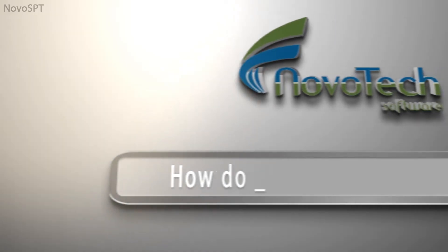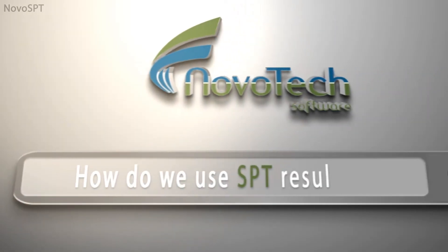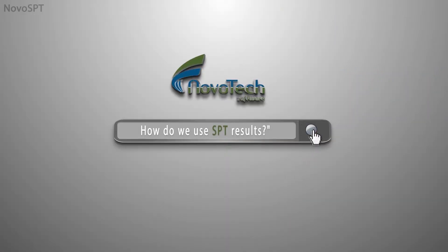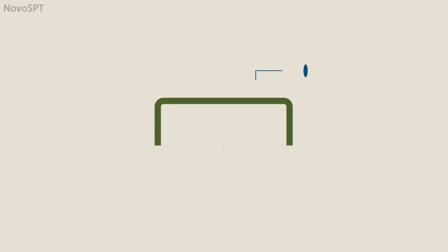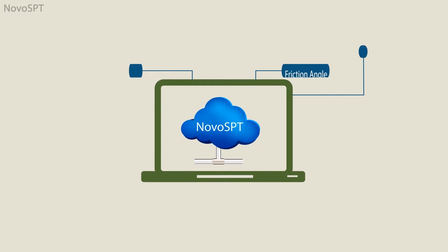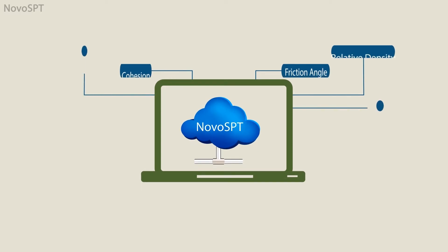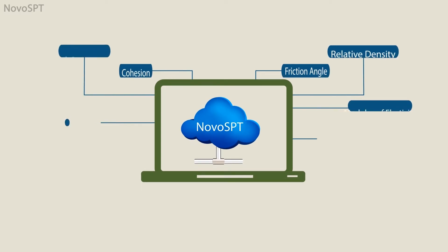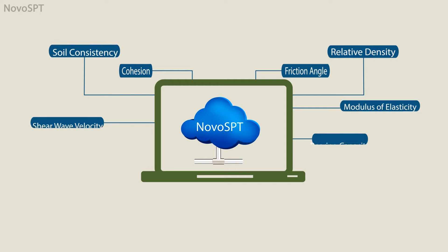How do we use SPT results? The SPT blow counts recorded during field investigation are converted to N60 and N160. These are used by geotechnical engineers to estimate various soil properties.